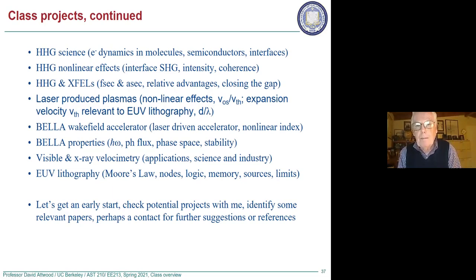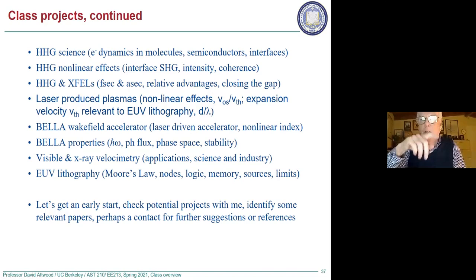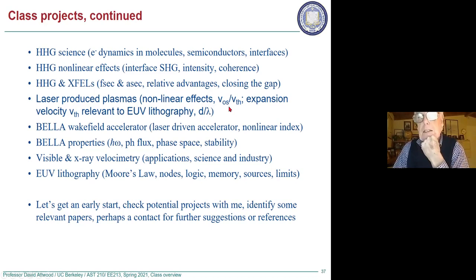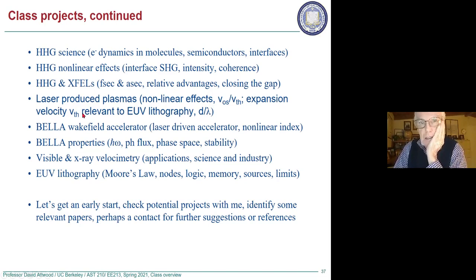Then there are laser-produced plasmas. This could be some meat and potatoes laser-produced plasma physics — it has to be a hot dense plasma to produce enough photons. It could be something in astrophysics, but nonlinear effects are quite common here, and they're normally written in terms of the oscillating velocity — the so-called quiver velocity of the electrons in a focused beam, V_os, over V_thermal. When V_os/V_th is much less than one, there's not too much nonlinearity; when it gets to around one or greater than one, you have really strong nonlinear effects: stimulated Brillouin scattering, stimulated Raman scattering, etc. There's also expansion velocity, which we'll cover briefly.